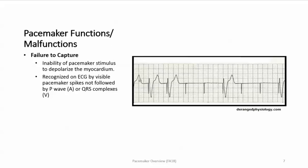The next malfunction is failure to capture — this is the inability of the pacemaker stimulus to depolarize the myocardium. The pacemaker fires but no depolarization occurs. It is recognized on the ECG by visible pacemaker spikes not followed by a P wave in atrial pacing, or QRS complexes in ventricular pacing. The pacemaker sent the signal but nothing happened.